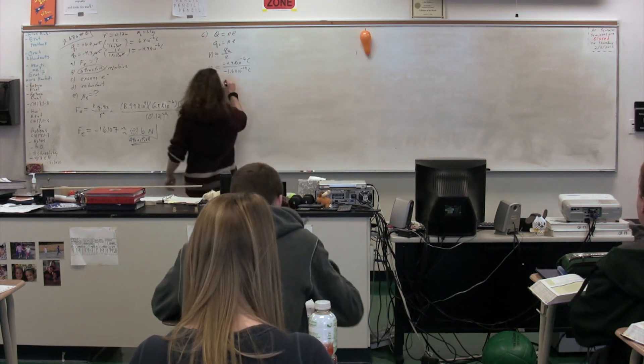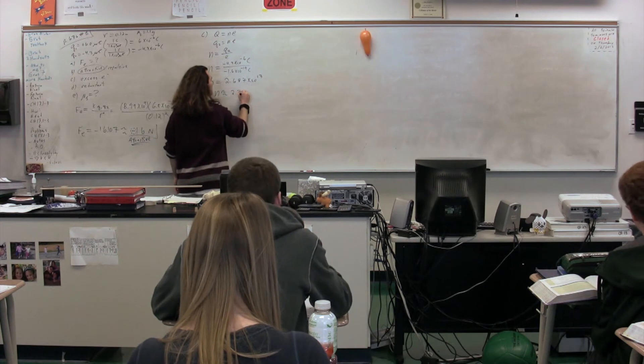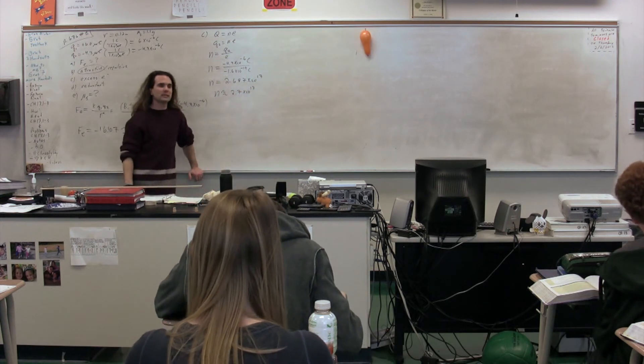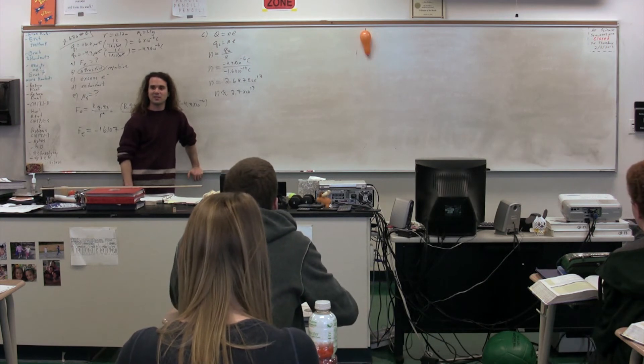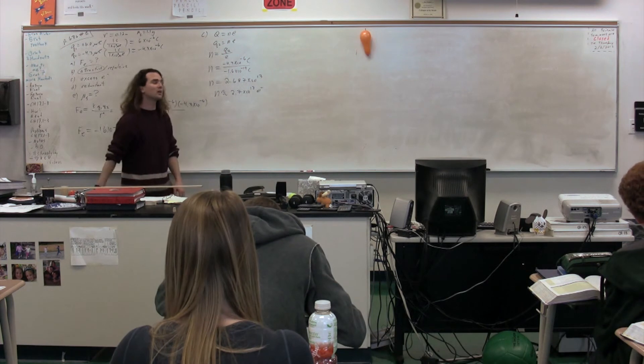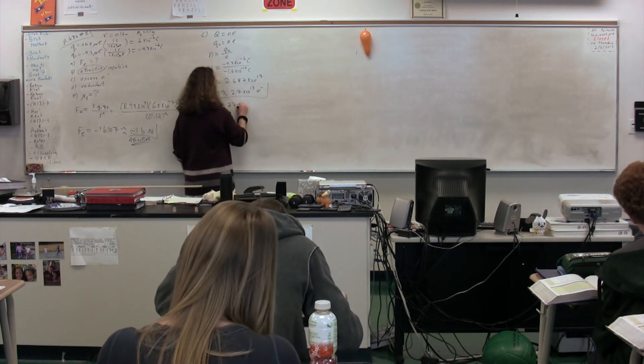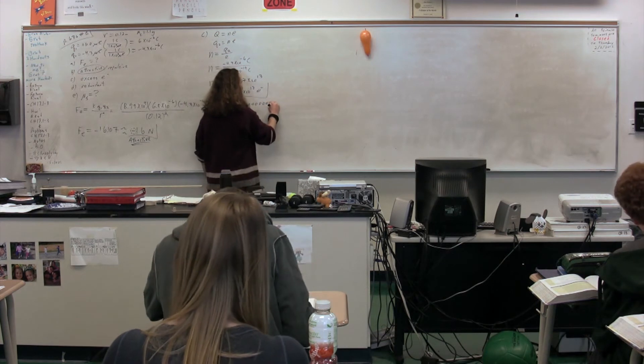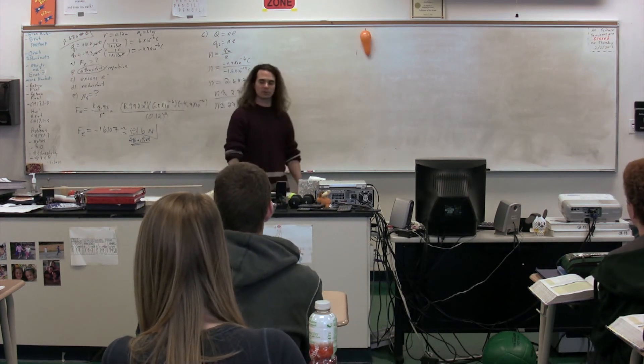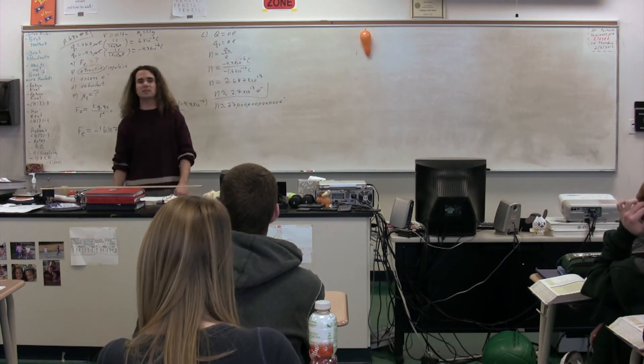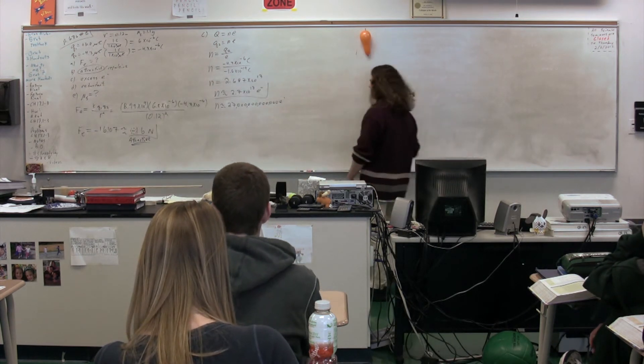So n, what is n? 2.687 times 10 to the 13th. With sig figs, we'll go with 2.7 times 10 to the 13th. What dimensions? Electrons. Because remember, this is the excess number of electrons. So to put it in perspective, without scientific notation: 27 trillion electrons. In other words, on this cork, there are 27 trillion more electrons than there are protons. 27 trillion more electrons than protons. Going back to 1909, the Millikan oil drop experiment. Remember, he proved that the charge could only be integers of this. The next charge that he could have would have 27 trillion and 1 electrons, not 27 trillion point 5, but rather 27 trillion and 1.